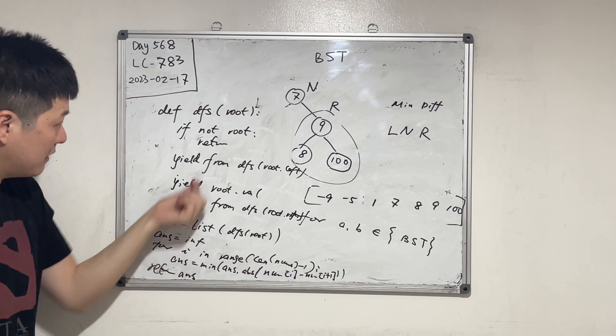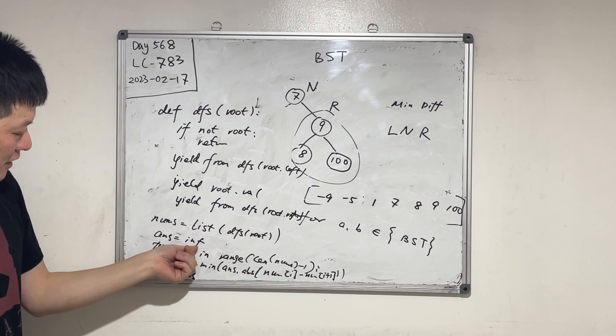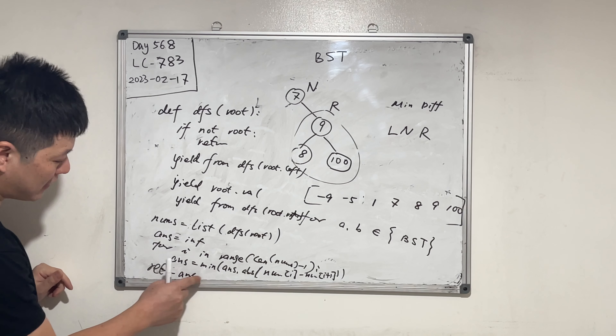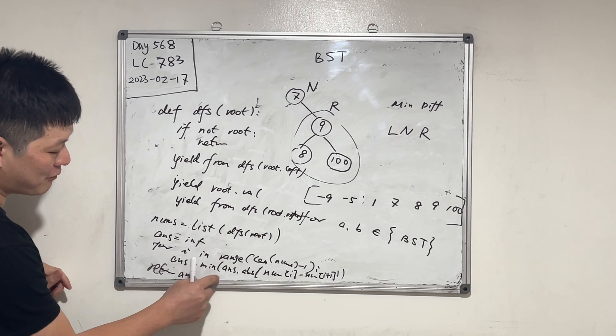If the root is empty, the function will return infinity, so we can handle that. Alternatively, we can use: return min(abs(numbers[i] - numbers[i+1]) for i in range(len(numbers) - 1), default=0). The default=0 means if the iterable is empty, it returns zero. Otherwise it returns the minimum of all the elements in the iterable.